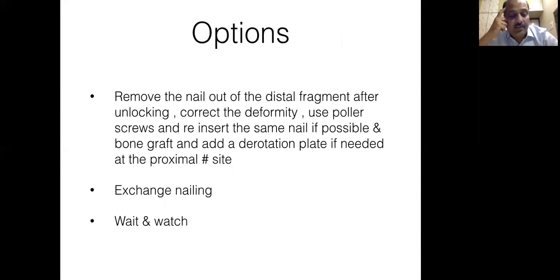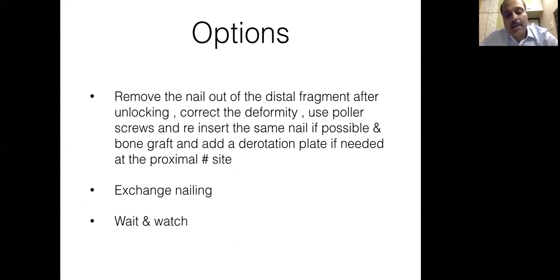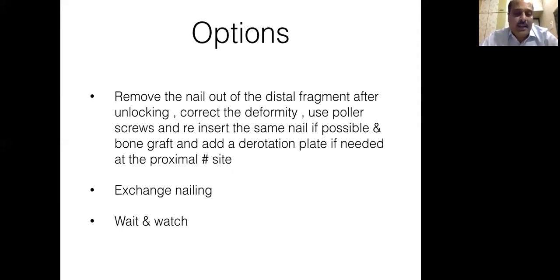After three months, what were the options available to me? First was to wait and watch, because in segmental fractures union can be very slow. I thought I would wait since the patient was comfortable, the implant was holding well, and maybe there would be some union four to six weeks later — I would accept the union and then address the valgus at the distal fracture site with a corrective osteotomy at some other day. Second option was to remove all the hardware and do a proper exchange nailing with correction of the deformity, which might be a lengthy surgery. The third, a middle path, was to take out the locking bolts, withdraw the nail out of the distal fragment, correct the deformity either externally or by soft tissue release, and reinsert the same nail in a more acceptable position, if required using polar screws.